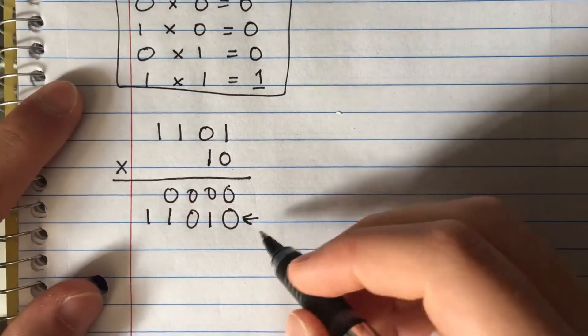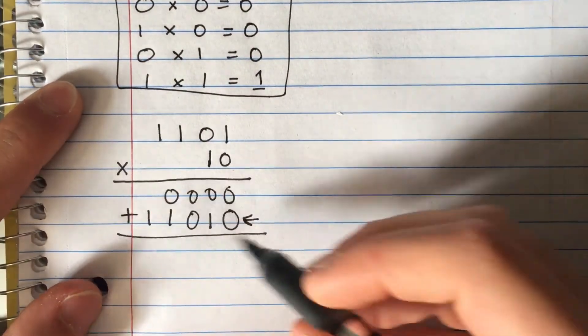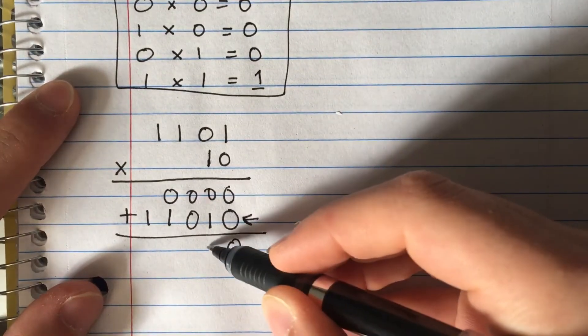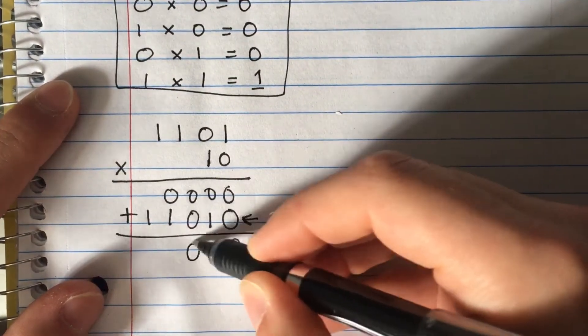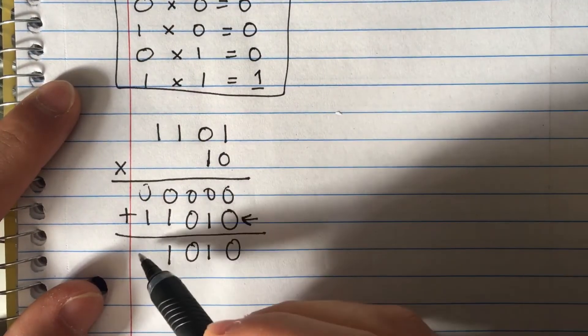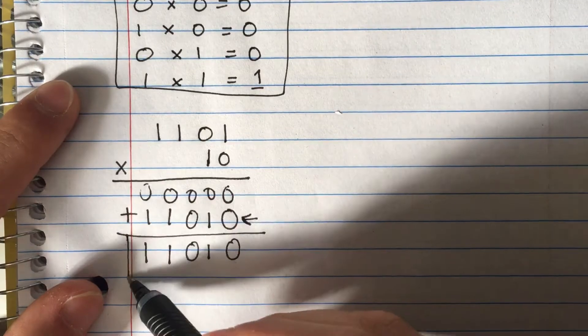Now we're going to add these two rows: 0 plus 0 equals 0, 0 plus 1 equals 1, 0 plus 0 equals 0, 1 plus 0 equals 1, and 1 plus 0 equals 1. So this is your answer: 11010.